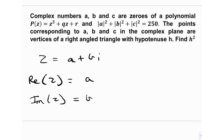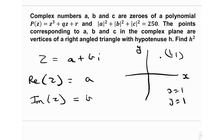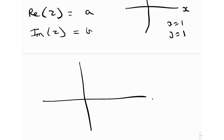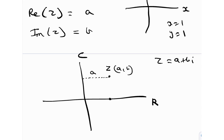What's the argand plane? On a normal coordinate axis you have an x-axis and a y-axis, and you can plot any point. But now on the argand plane, we have a real axis and a complex axis. Any point can have coordinates (a, b), so z = a + bi, where the distance along the real axis is a and the perpendicular distance on the complex axis is b.